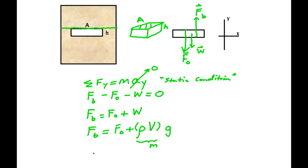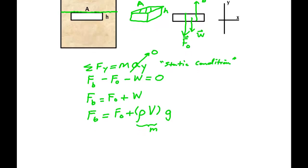However, I can relate what the volume is to my little box here. It's the area times the height. So, FB is equal to F naught plus rho times the area times the height times G.